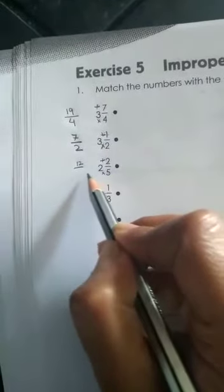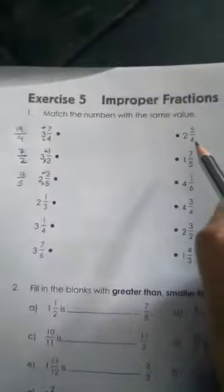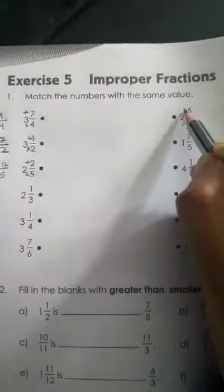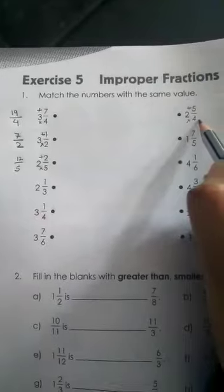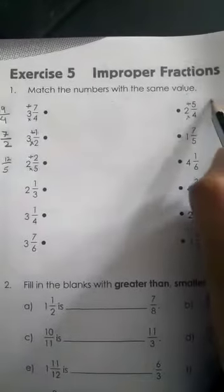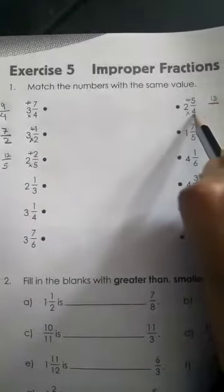You do this one the same way. You can write here multiply and plus. 4 times 2 is 8, 8 plus 5 is 13 by 4. The denominator will be here.